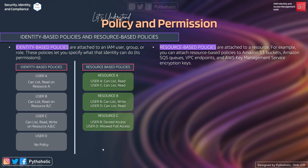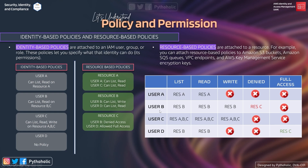Resource C's resource-based policy has User B denied access, and User D is allowed full access. This represents the total policy implementation of the AWS account. Now let's see how it affects permissions. Looking at this chart with four users A, B, C, and D and operations list, read, write, denied access, and full access — for User A, considering both identity-based and resource-based policies, it can list and read on Resource A.